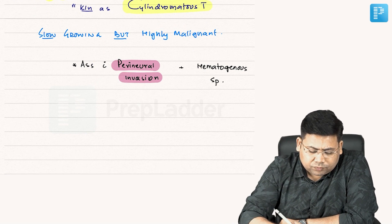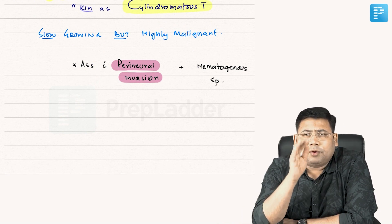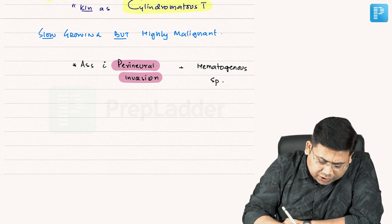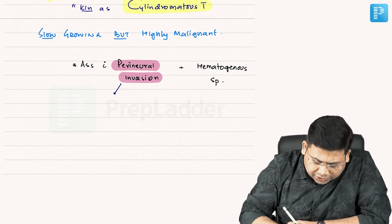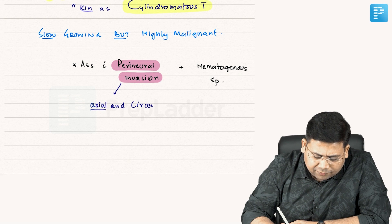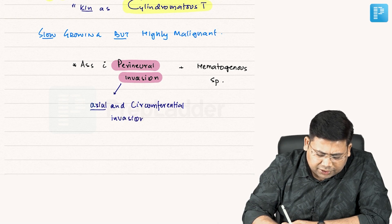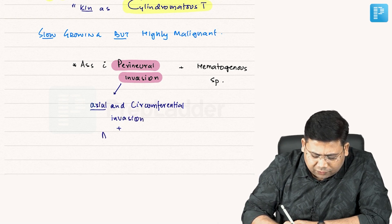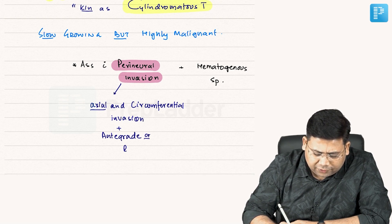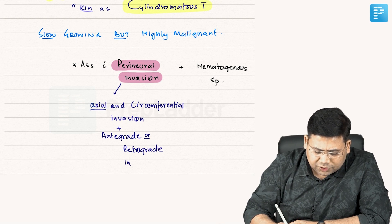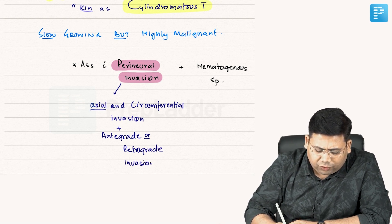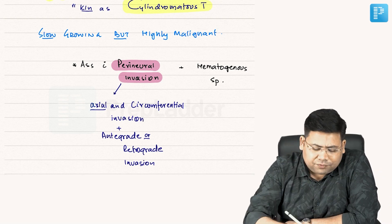When we talk about perineural invasion, it is associated with excellent circumferential invasion. Not only this, it is also associated with anterograde or retrograde invasion. The next question is: what are the target nerves where this invasion occurs?